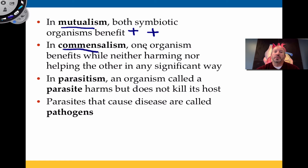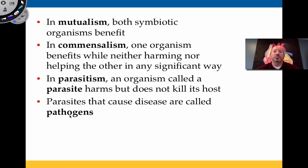Commensalism is when one organism is benefiting and the other is neither harmed nor helped — it's sort of a null relationship. Parasitism, or a parasite, harms the host but doesn't kill it: one is benefiting and the other is harmed. The parasite benefits and the host is harmed. You'd call that organism a pathogen if it's causing a particular disease.